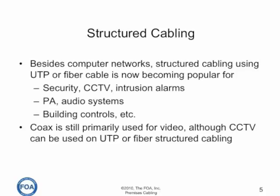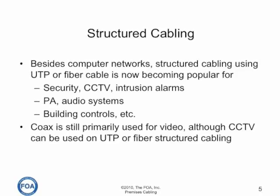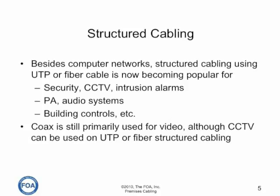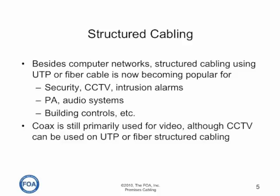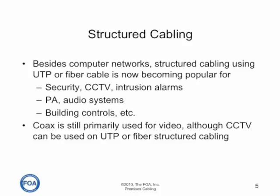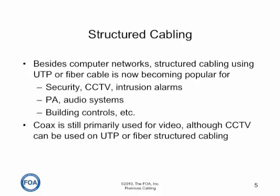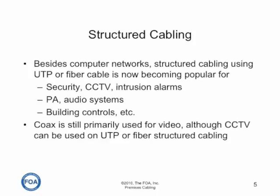The original use for structured cabling was computer networks, but now many other types of systems are designed to operate over UTP or fiber cable, including security and closed circuit television systems, intrusion alarms, public address and audio systems, building controls, and the like. While coax is still primarily used for video, IP video is used for a lot of systems over normal structured cabling.